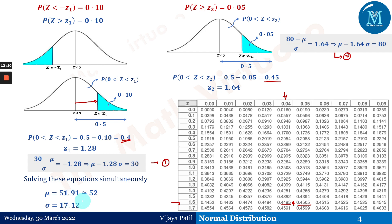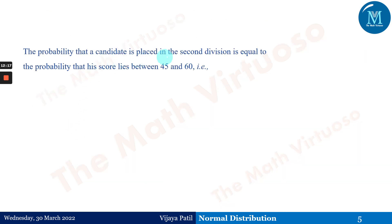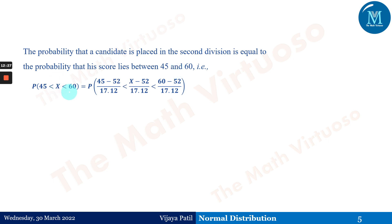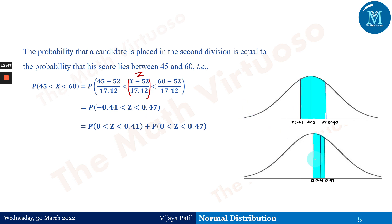Now we can find the probability that a candidate is placed in the second division, which requires securing between 45% and 60%. So we need P(45 < X < 60). Converting to Z: Z for 45 is (45 − 52)/17.12 ≈ −0.41, and Z for 60 is (60 − 52)/17.12 ≈ 0.47. So P(−0.41 < Z < 0.47).